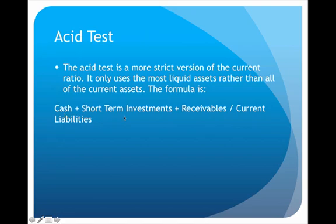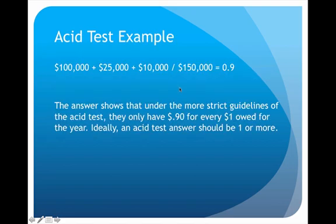Cash is already cash; short-term investments will be sold in the short term; and receivables are money people owe us — so these are the most liquid assets. In this example, the company had $100,000 cash, $25,000 in short-term investments, and $10,000 in receivables, divided by $150,000 in current liabilities, giving an acid test of 0.9. Ideally this should be at least one or more, since 0.9 means they only have ninety cents for every dollar owed.